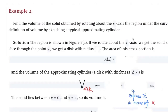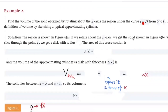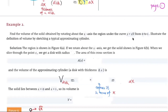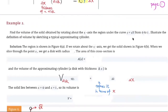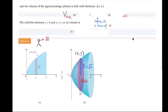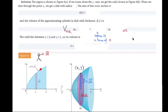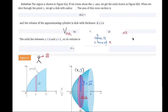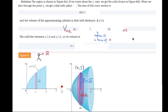Example two: find the volume of the solid obtained by rotating about the x-axis the region under the curve y = √x from 0 to 1. Illustrate the definition of the volume by sketching a typical approximating cylinder, or disk. So first we have y = √x. We go from 0 to 1 along this curve and then rotate it about the x-axis, getting a solid of revolution.